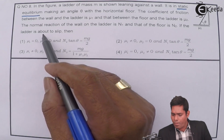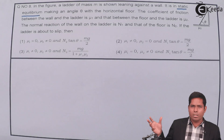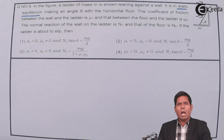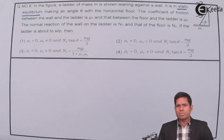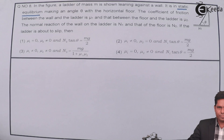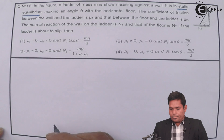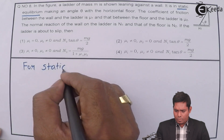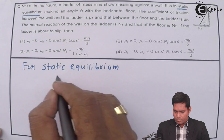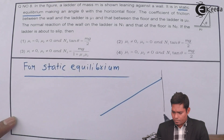If the ladder is about to slip, it is now on the verge of losing static equilibrium. We will write the conditions for static equilibrium, then we will see under what condition the ladder will slide.